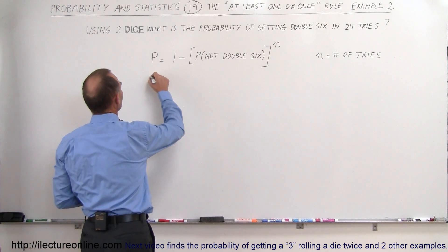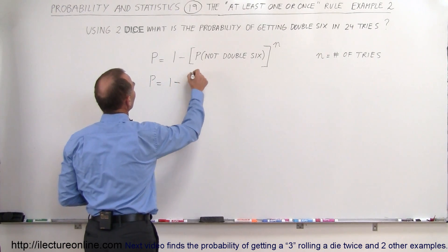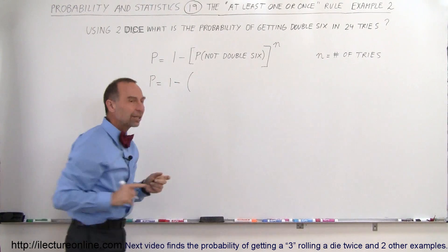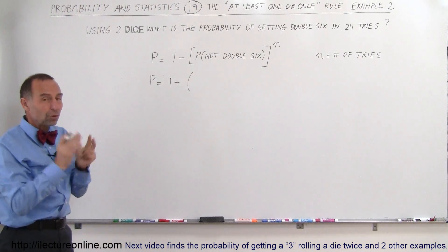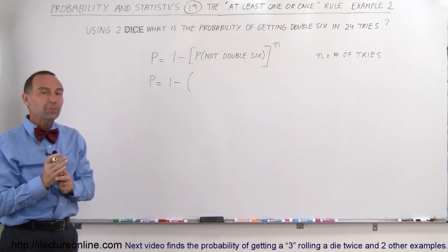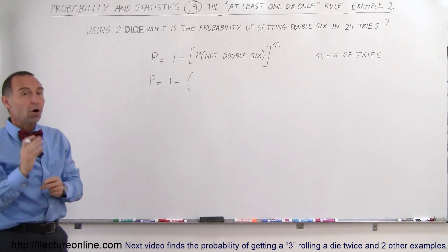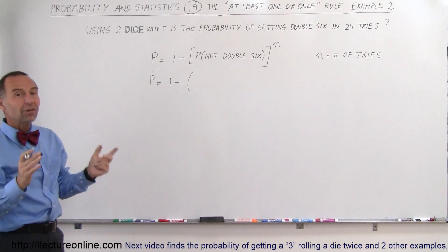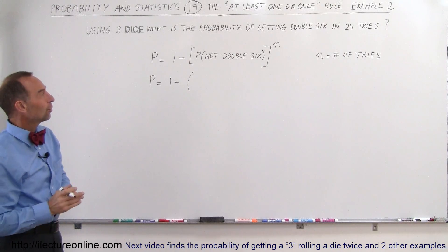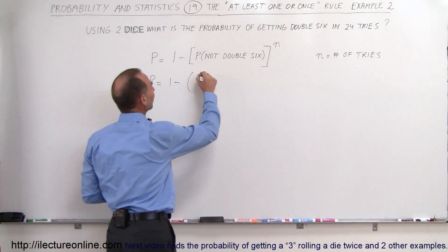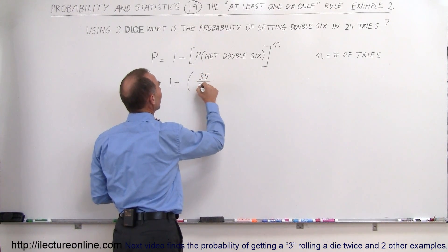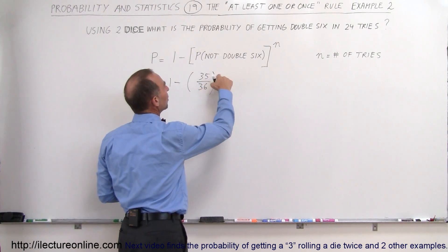So plug in the numbers, we get the probability. It's 1 minus the probability of not getting a double 6. Notice there's 36 numbers in the sample space, 36 combinations of the two dice of what you can get, and all but 1 is other than double 6. Double 6 is only one of those 36. That means 35 out of 36 is not getting a double 6, and that has to be raised to the 24th power because it's the number of tries.